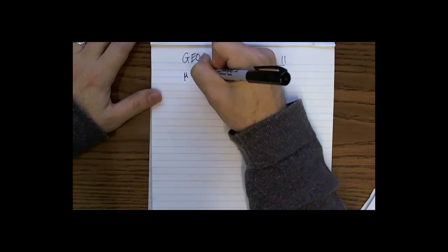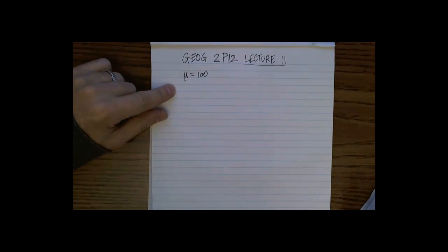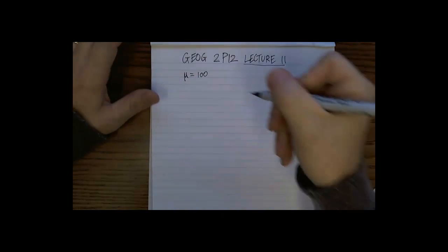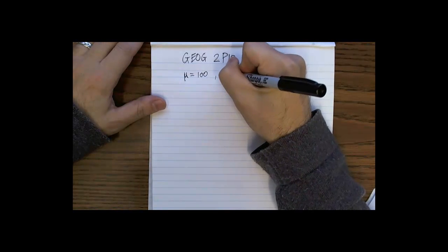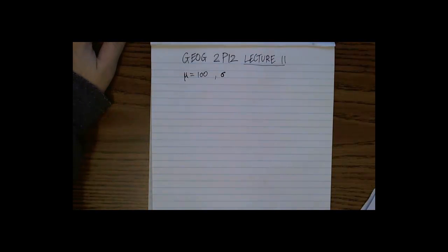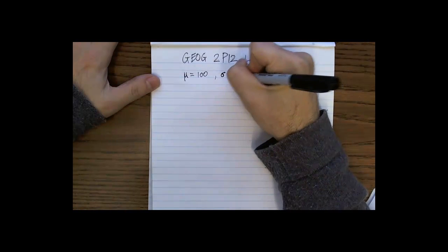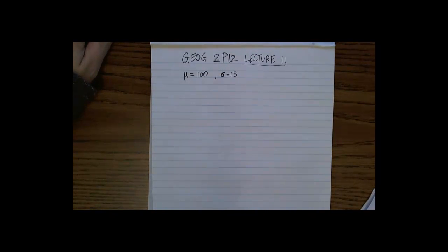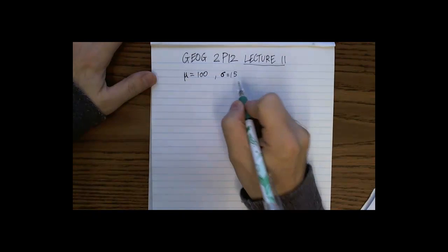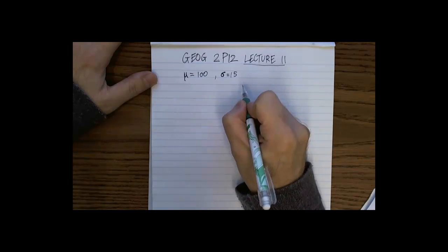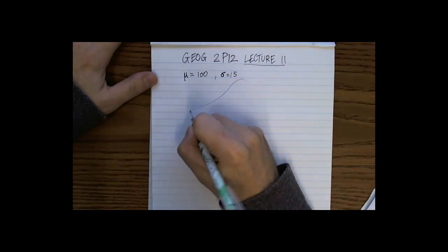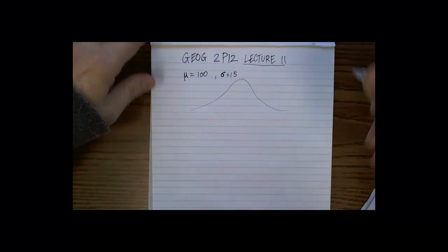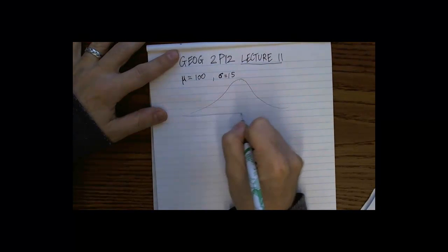That we've got a mean of 100, so remember mean mu, the mean mu, so this is a population mean of 100, and that we've got a standard deviation of, let's say, 15, standard deviation of 15.